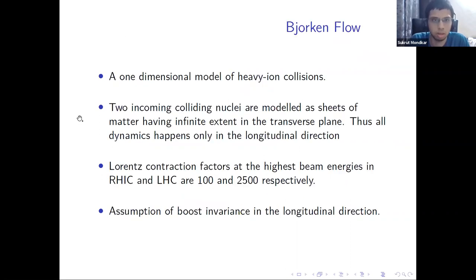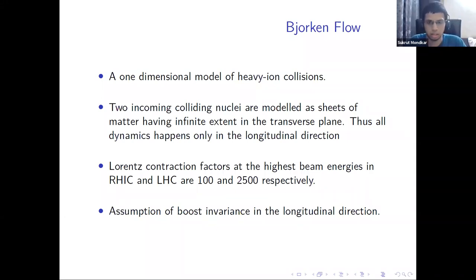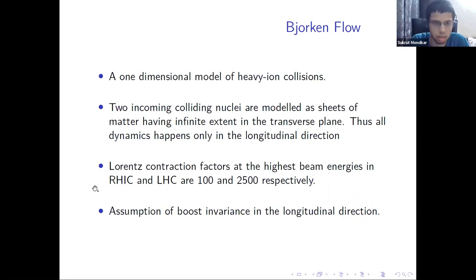Bjorken flow is a one-dimensional model of heavy-ion collisions. In this model, the incoming colliding nuclei — which look like pancakes due to Lorentz contraction — are modeled as infinite sheets in the transverse plane, and all dynamics happen only along the longitudinal direction (the collision axis). This assumption is phenomenologically viable because the Lorentz contraction factors at heavy-ion collision experiments like RHIC and LHC are very large: about 100 and 2500, respectively. There is also an assumption of boost invariance in the longitudinal direction.